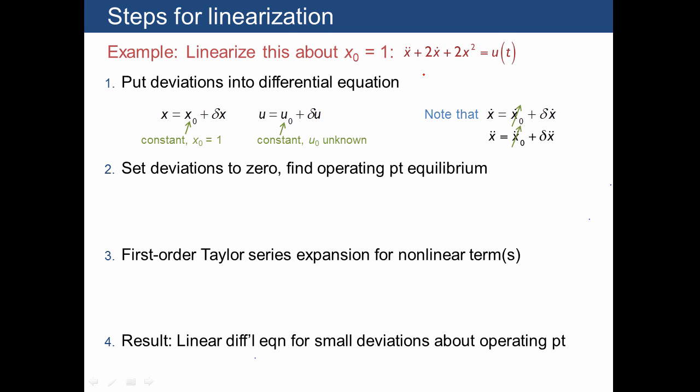Here's an example in a differential equation where we're going to use the same 2x² that we just examined, but now it's part of a differential equation, so we can show all the steps. So remember that we want to take x and we want to replace it with a constant plus a small deviation, and we want to do the same thing for u. And we said the first thing we want to do is set the deviations equal to 0 and find an operating point equilibrium.